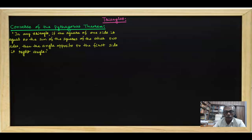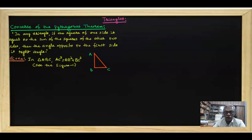This converse is also true and was proved by Euclid himself in one of the thirteen volumes of his book Elements. Now, given that in triangle ABC, AC squared equals AB squared plus BC squared, we have to prove that angle B is 90 degrees.